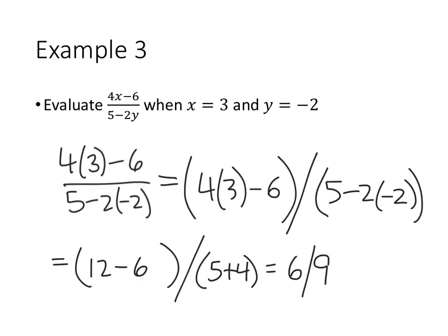Now that's not simplified though. We can reduce that fraction 6/9 by taking the top and the bottom and dividing them both by 3. 6 ÷ 3 is 2, 9 ÷ 3 is 3, and so the answer we're looking for here is 2/3.